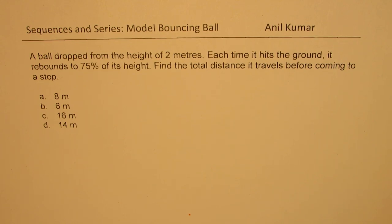The question here is, a ball dropped from the height of 2 meters. Each time it hits the ground, it rebounds to 75% of its height. Find the total distance it travels before coming to stop. Four choices are given to you.